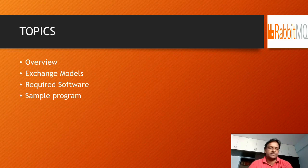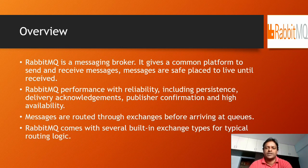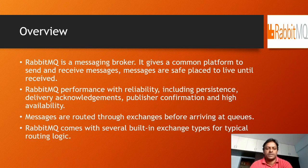RabbitMQ is a message broker that gives a common platform to send and receive messages. Messages are safely placed and stored until received — it has a durability feature through which we can store messages until they are delivered to the next endpoint. RabbitMQ performs with reliability including delivery acknowledgements, publisher confirmation, and high availability. These are the main features which attract people to use RabbitMQ. Messages are routed through exchanges before arriving at a queue.